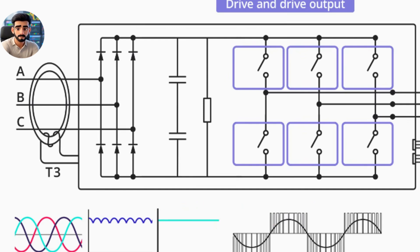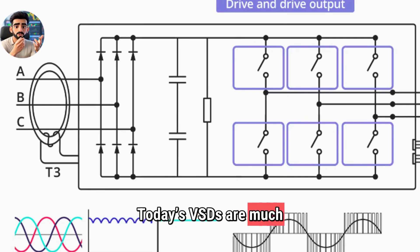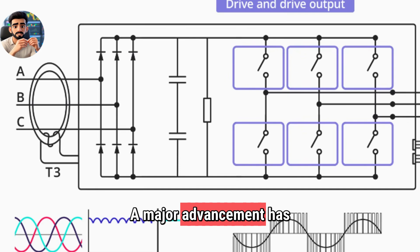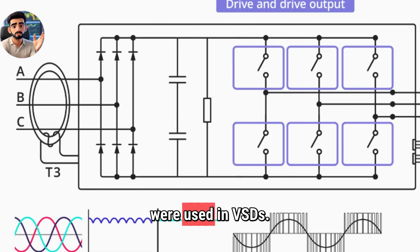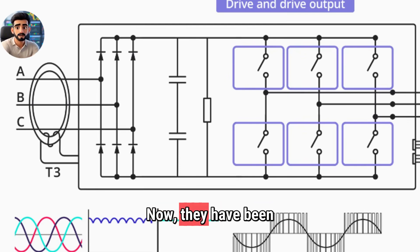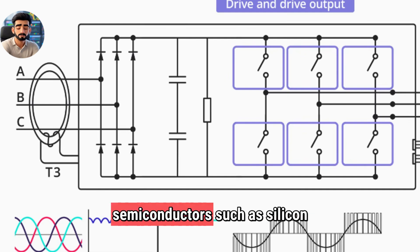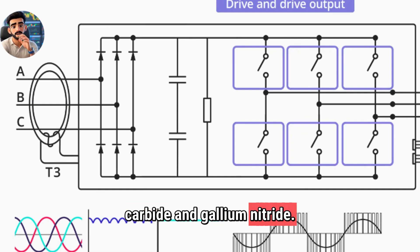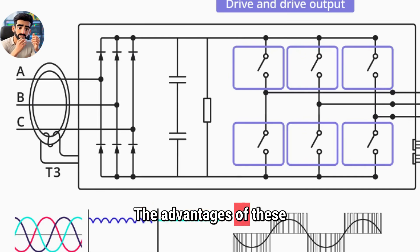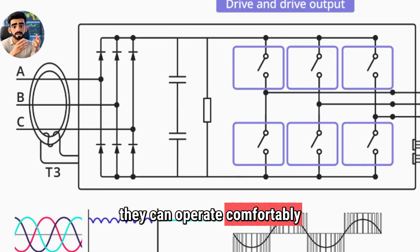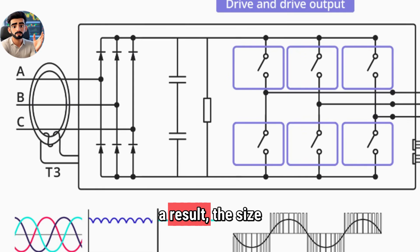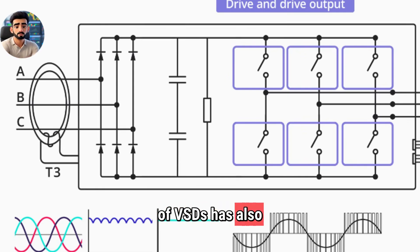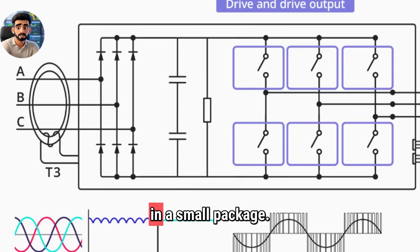Technology is always advancing, and VSD is no exception. Today's VSDs are much more advanced than before. A major advancement has occurred in semiconductors. Previously, traditional silicon-based components were used in VSDs. Now, they have been replaced by wide bandgap semiconductors such as silicon carbide and gallium nitride. The advantages of these new materials are that they can operate comfortably at high voltages and high temperatures, they have very low energy loss, and as a result, the size of VSDs has also become smaller — meaning more power in a small package.